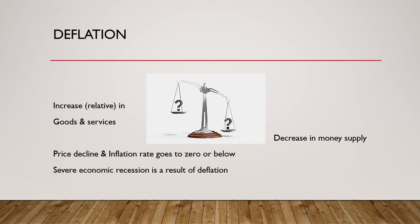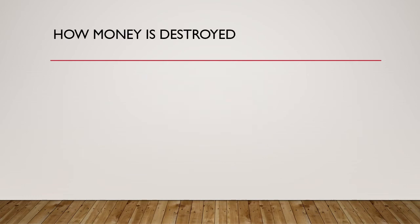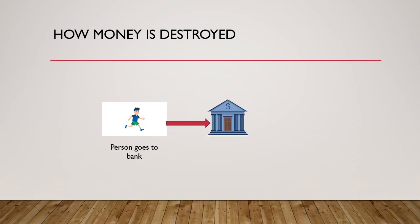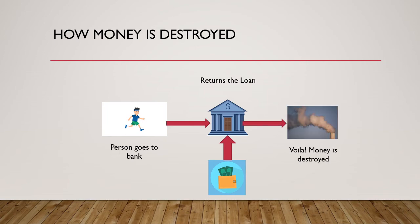Deflation can cause severe economic recession or even an economic crash. Deflation happens because there is a decrease in money supply. A decrease in money supply can occur if a person goes to the bank, doesn't see much demand for his goods and products in the economy, and gives the loan back. As easily as money was created out of thin air by the banks, just as easily this money is also destroyed. If more and more people start doing it, deflation can happen. Ironically, deflation can happen as a result of the very malinvestments that caused the inflation in the first place.